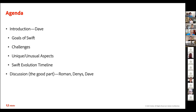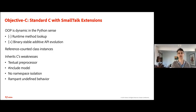Dave outlines his talk: he'll cover the goals they had in creating Swift, then discuss things that are unique or unusual about Swift, then go over a timeline of Swift development since the 1.0 release, the challenges they faced, and then get to the good stuff — the panel discussion. He invites questions at any point.